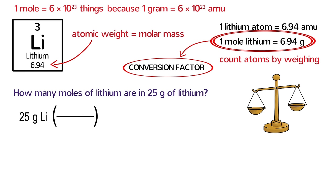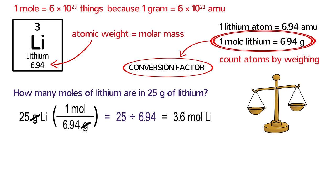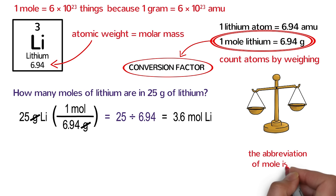Grams on the top and bottom cancel each other out. Next, write one mole on the top of the fraction. Because the one is on the top of the fraction, this becomes a division problem. In your calculator, type 25 divided by 6.94. The answer is 3.6 moles of lithium. You may have been wondering what happened to the E in mole — it turns out that the abbreviation of mole is M-O-L. Isn't it just wonderful how much energy we're all going to save by not writing the E?